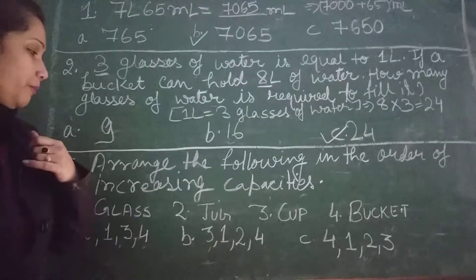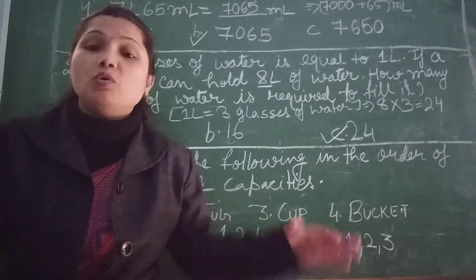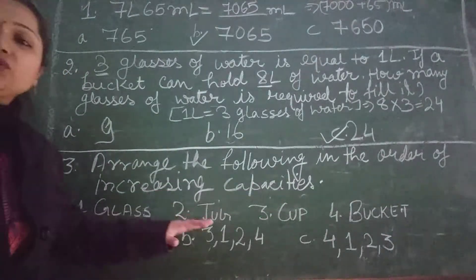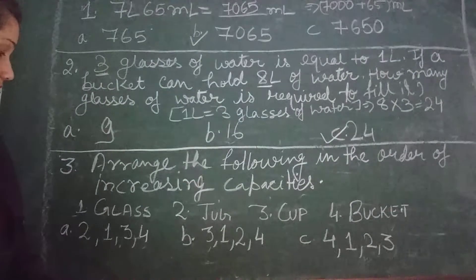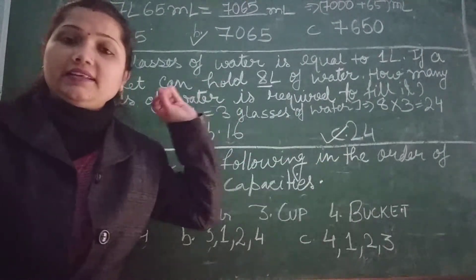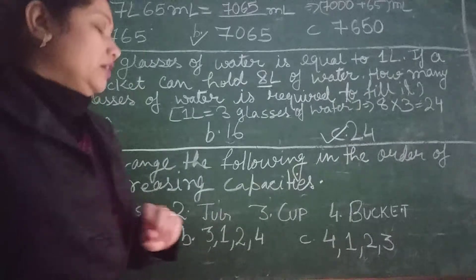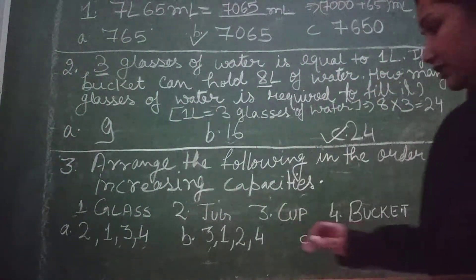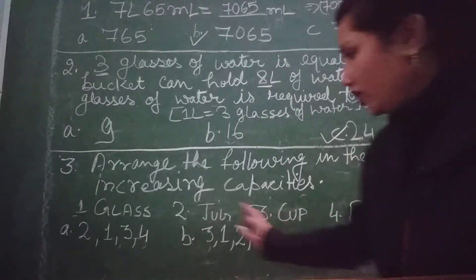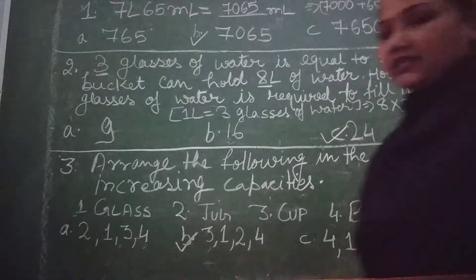And last is the bucket. The size of the bucket is bigger than all three items, so it definitely contains the most quantity of liquid. So here we arrange the items according to increasing capacity: cup is the smallest, then glass, then jug, and then bucket. Option B will be the correct answer.